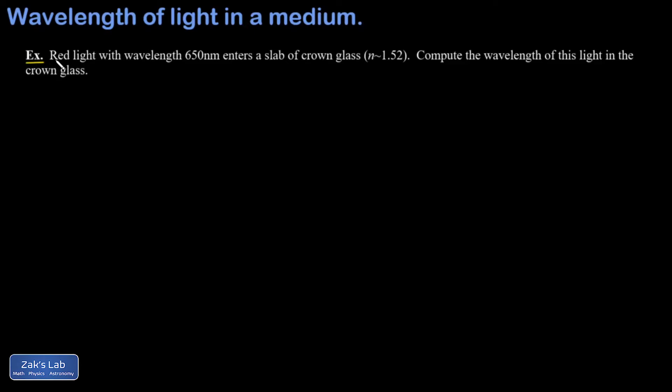Let's wrap things up with a simple example. So we have red light with wavelength 650 nanometers entering a slab of crown glass. The index of refraction is given to us as 1.52, and we want the wavelength of this light in the crown glass. So there's not a lot to do here.